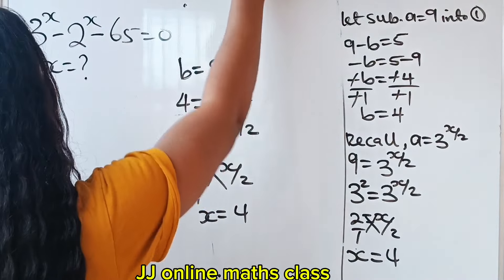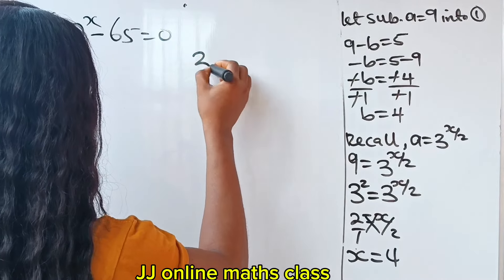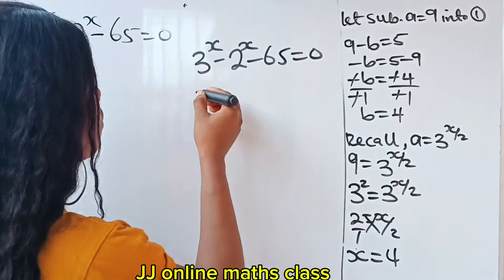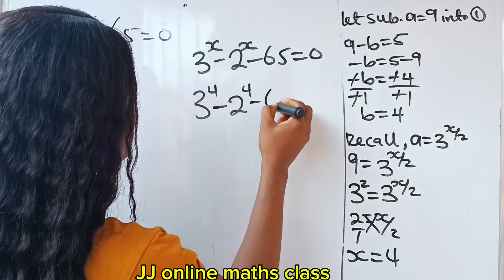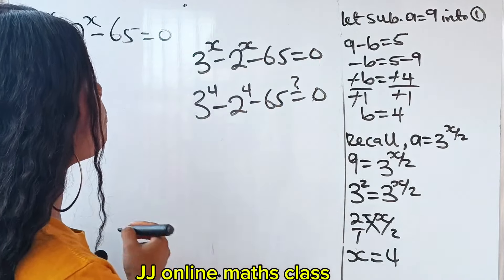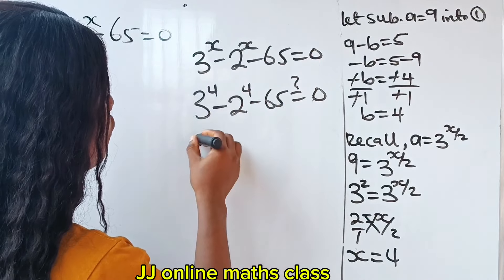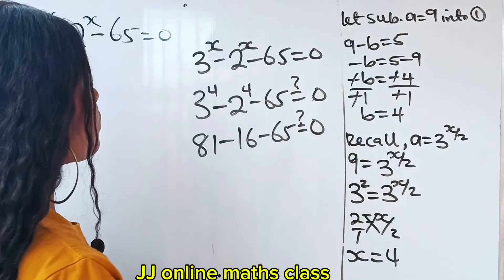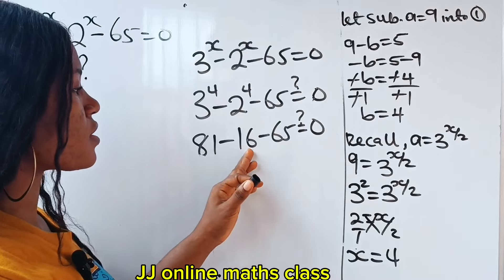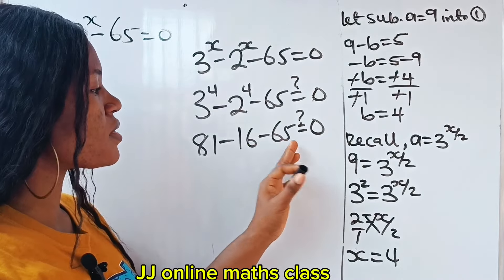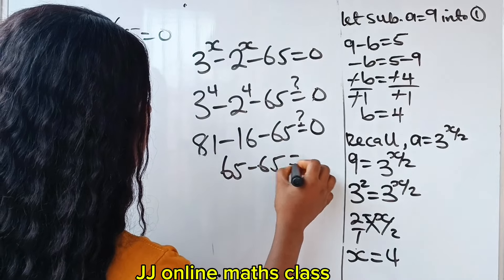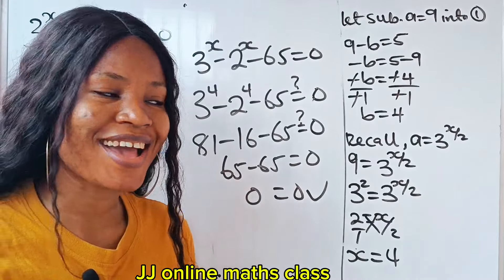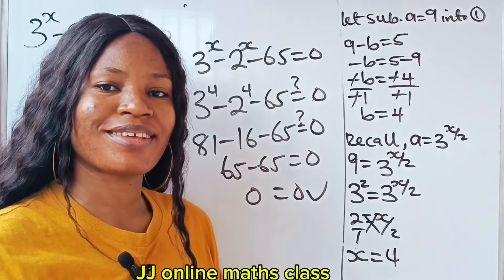Let's check. According to the equation, 3 to the power of x minus 2 to the power of x minus 65 equals 0. Substituting x equals 4: 3 to the power of 4 minus 2 to the power of 4 minus 65 equals 0. That is 81 minus 16 minus 65 equals 0, which gives 65 minus 65 equals 0. So 0 equals 0, confirming our solution is correct. Thank you so much for watching. Have a lovely day.